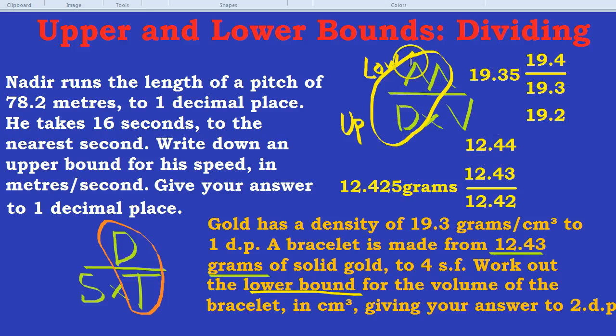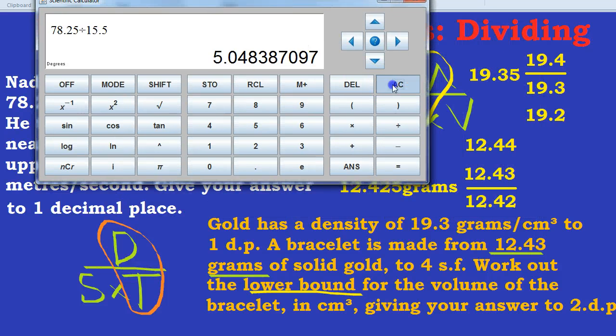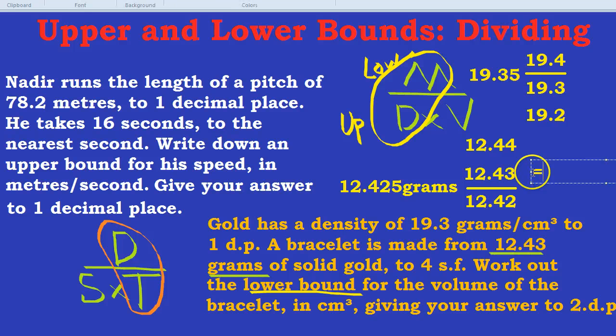Now we do mass divided by density. So 12.425 divided by 19.35. Mass divided by density. And you get 0.64 to two decimal places. 0.64 centimeters cubed for the bracelet. Very tiny bracelet. And that's how to do upper and lower bounds when you're using division.